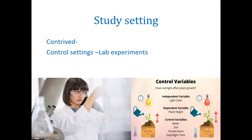For example, a lab experiment: does red light affect plant growth? The independent variable is light color, the dependent variable is plant height, and the control variables are water, soil, and temperature. The relationship between independent and dependent variables exists within the environment, but control variables like water, soil, and temperature are controlled by the researcher. Studies conducted in the lab environment are called contrived studies — a controlled settings study.